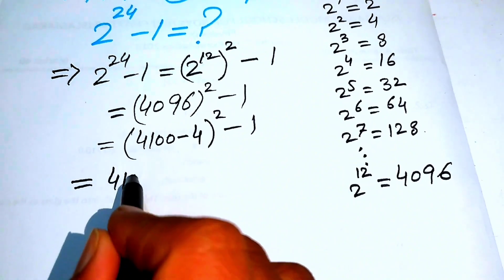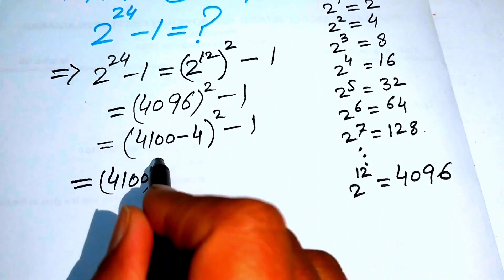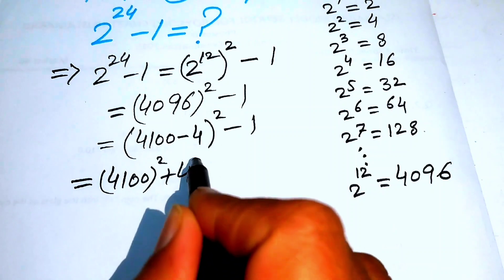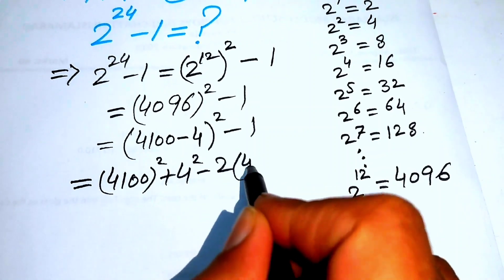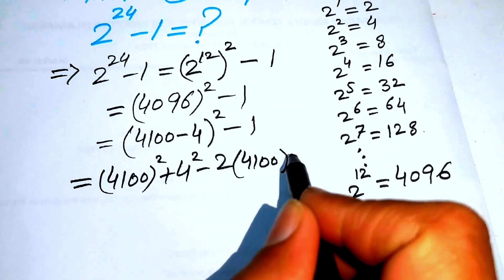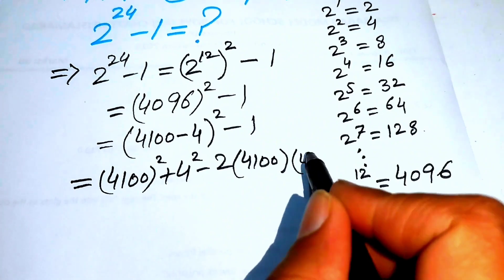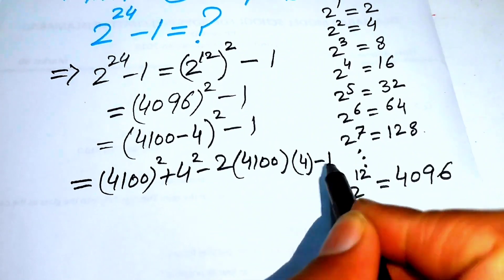We know that it equals a squared plus b squared minus 2 times a b. Our a is 4100 and b is 4, and this is minus 1.